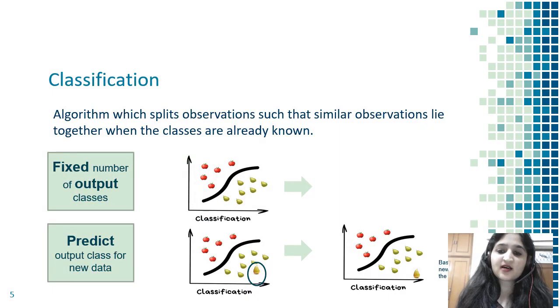The next concept is classification. In classification, I already know the output classes. It's an algorithm which splits observations such that similar observations lie together when the classes are already known. For example, we have apples and pears - we already know there are only two classes possible. If a new observation comes, like this new pear that's highlighted, the classification algorithm will predict whether it will lie on the apple side or the pears category side.